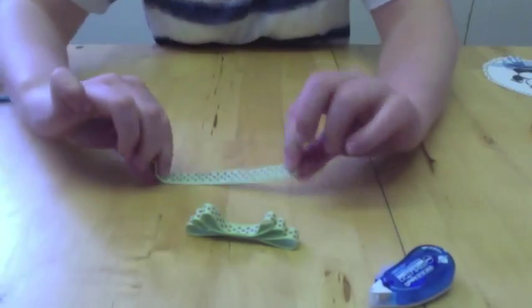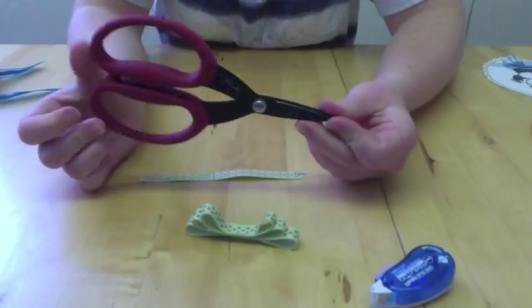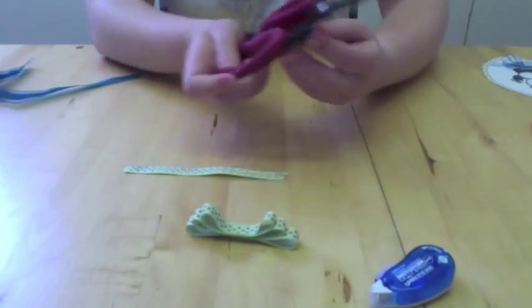Now with our last piece of ribbon I am going to cut a little bit off. So I am using Tim Holtz Tonic Scissors. I think they are brilliant. We all have a pair. And we all love them.